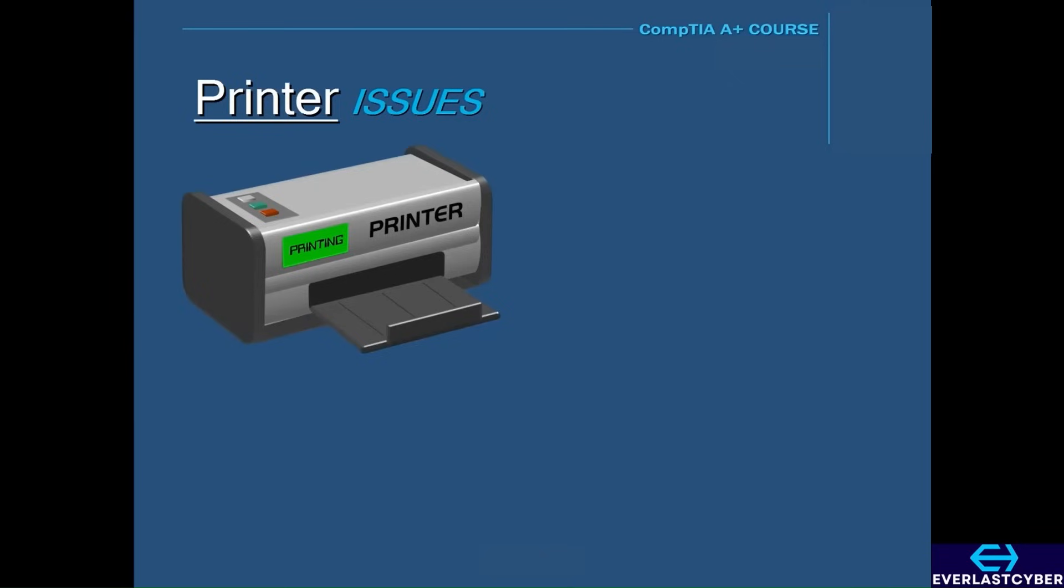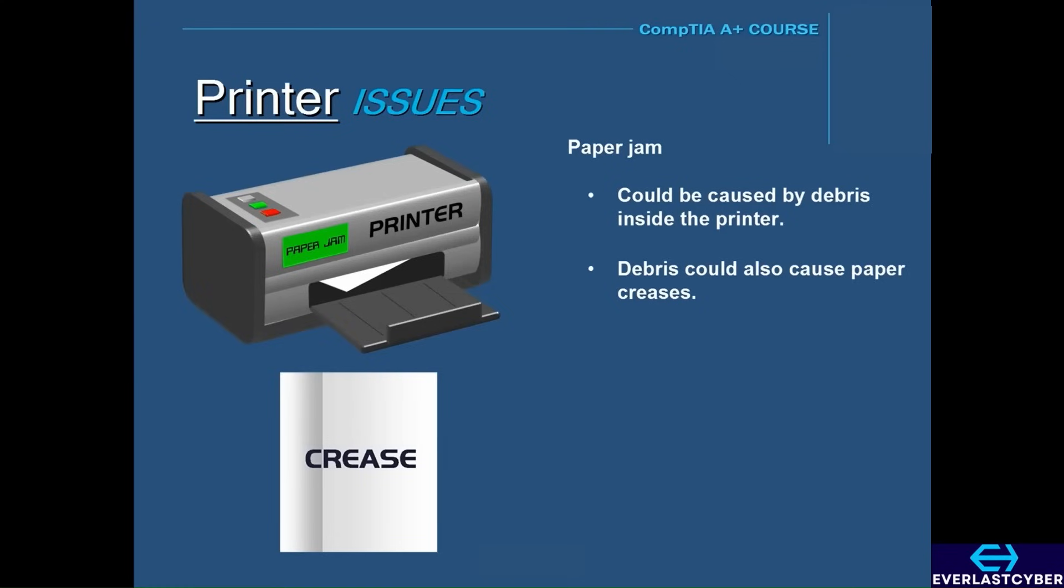Paper jams are another problem that can happen with printers. So if you try to print something and the paper doesn't come out, then you could have a paper jam. Paper jams could be caused by debris inside the printer. And debris inside the printer could also be the result of the paper coming out creased. Or it could also be caused by faulty pickup rollers. This typically happens with older printers because when the rollers wear out, they tend to have difficulty grabbing the paper and feeding it through. In these cases, you might want to inspect the rollers to see if they need replacing or open up the printer and check for any debris inside the printer.